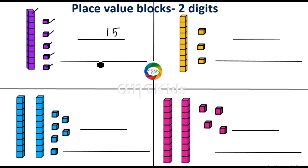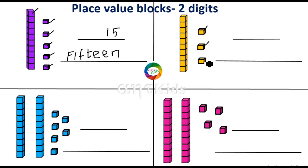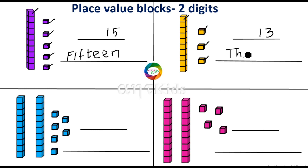So this represents the number 15 — F-I-F-T-E-E-N, 15. And here one, two, three — three one-blocks are there, so you have to write three in the ones place. And here you have only one ten-block, so you have to write one in the tens place. This represents the number 13 — T-H-I-R-T-E-E-N, 13.